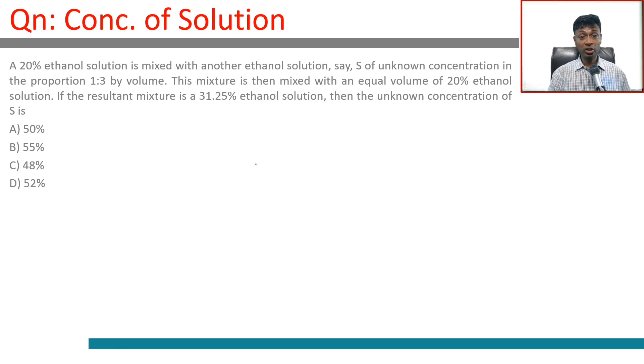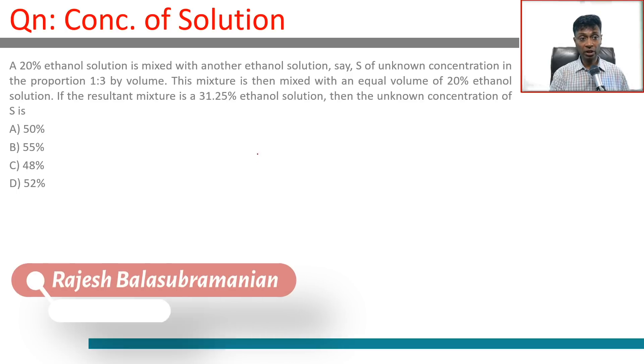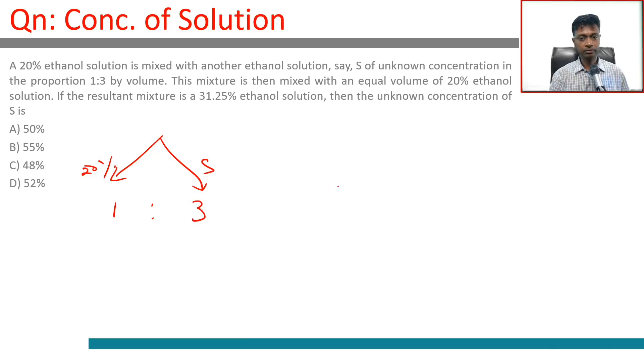A 20% ethanol solution is mixed with another solution S of unknown concentration in the proportion 1 is to 3 by volume. So 20% and S in the ratio 1 is to 3. The mixture is then mixed with